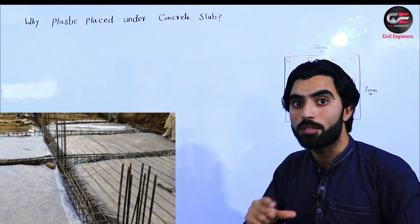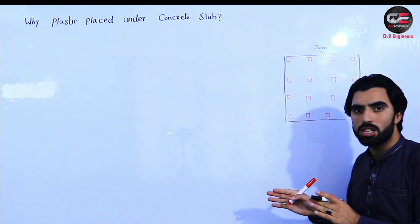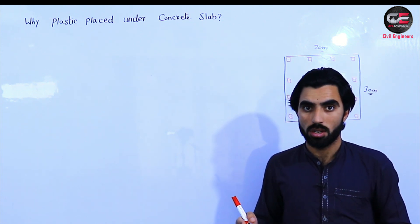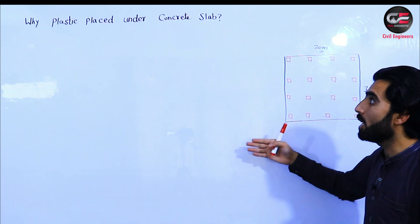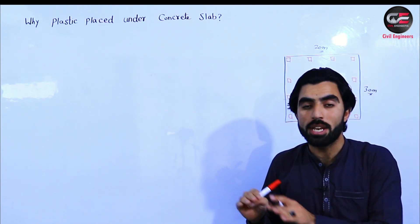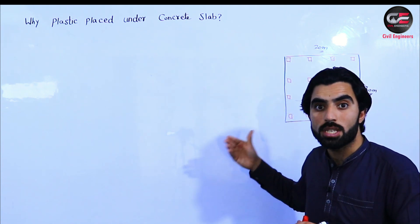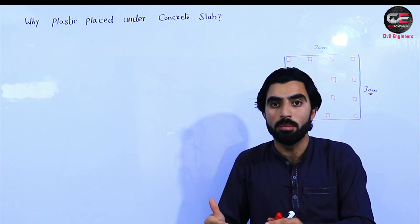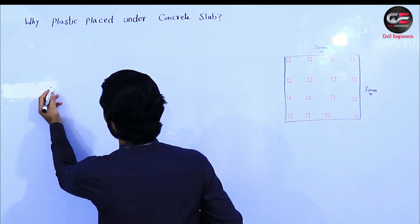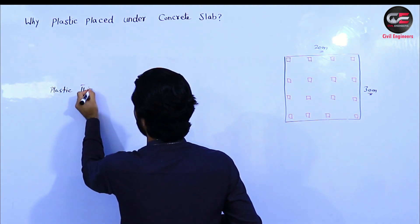What is the reason for placing plastic, and what should be the thickness? Especially where there is more moisture in the foundation area, we should place plastic under the concrete slab. When we place the plastic, the moisture cannot transfer to the foundation, to the slab, to the beam, to the column, or to the superstructure. This is very important.